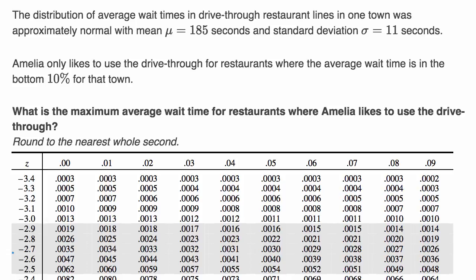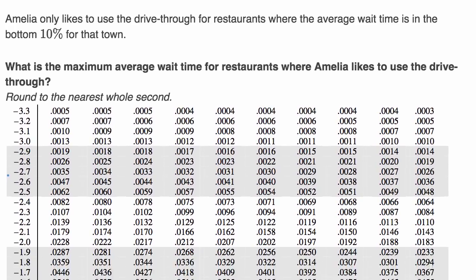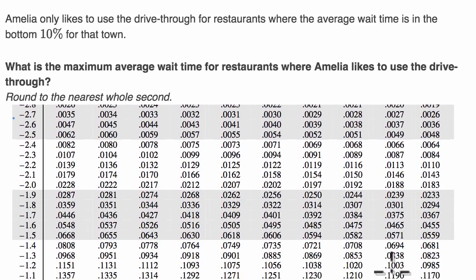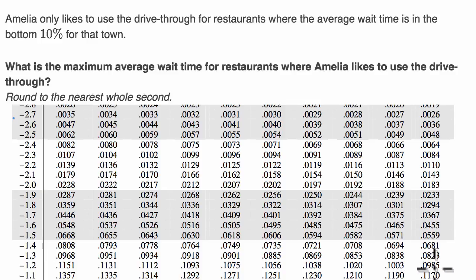As we scroll down the Z-table, remember the columns represent the hundredths digit: 0, 1, 2, 3, 4, 5, 6, 7, 8, 9. At a Z-score of negative 1.28 — that's the column for 8 in the hundredths place — we are just crossing the 10th percentile. But if we go a little more negative to negative 1.29, we are within the 10th percentile. So negative 1.29 appears to be the highest Z-score for which we are still within the 10th percentile.